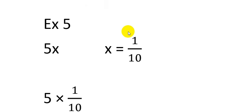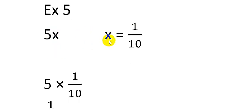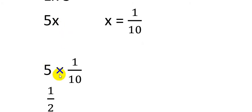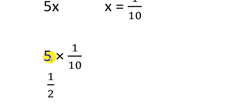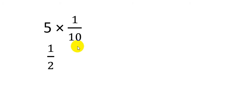Let's take another example with fractions, beginning with a single algebraic term. The value of x equals 1 over 10 and the algebraic term is 5x. So we write 5 multiply by 1 over 10. The numerator is 5 multiplied by 1 which is 5, and the denominator is 10. Dividing both by 5 gives 1 over 2, so the answer is 1/2.